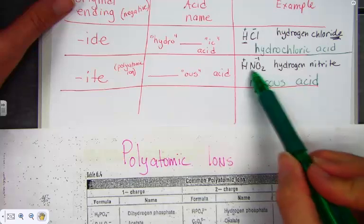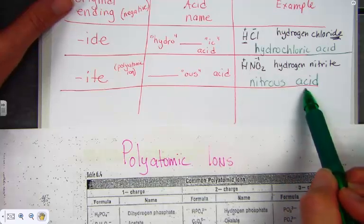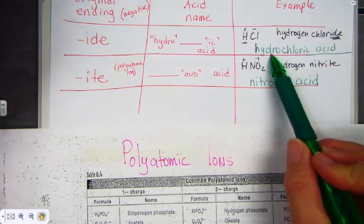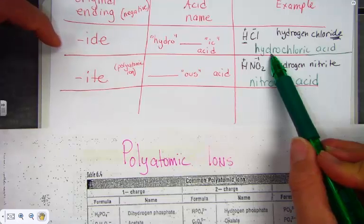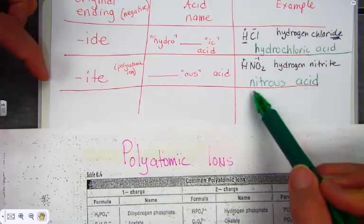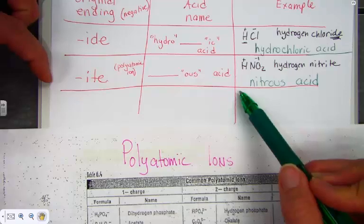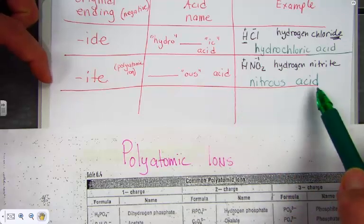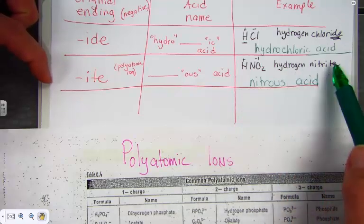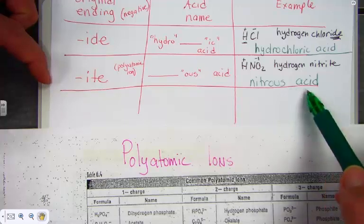Nitrous acid. Now, I know it starts with H because the name acid tells me that. Hydro is only heard in those binary acids that ended with -ide. We do not hear hydro in this word. It's simply nitrous acid. Hydrogen nitrite became nitrous acid.